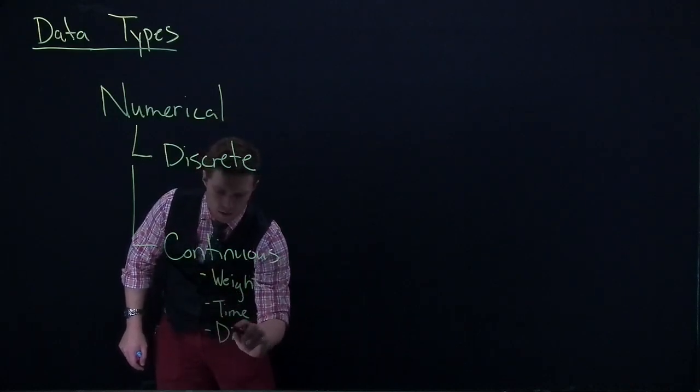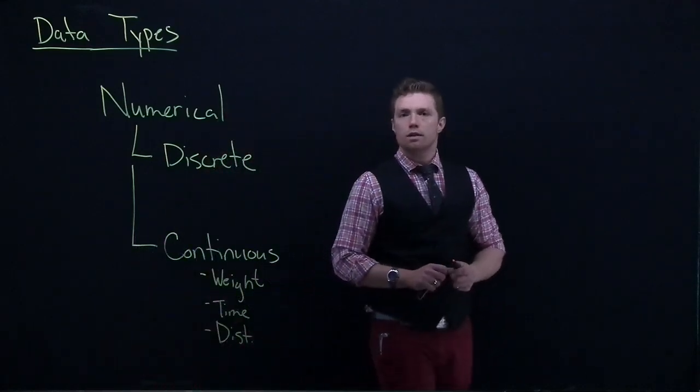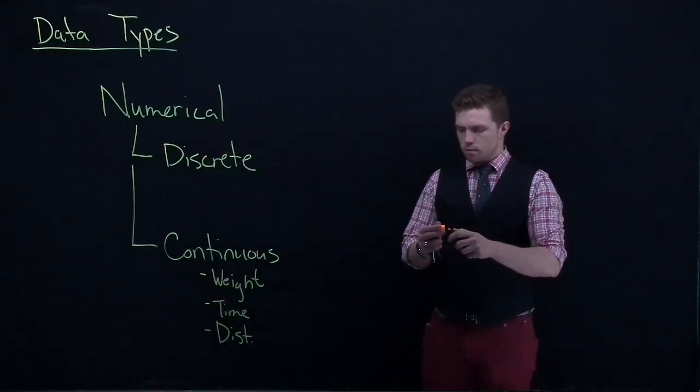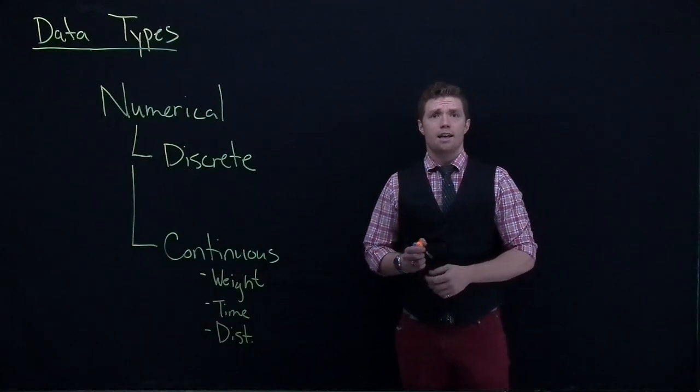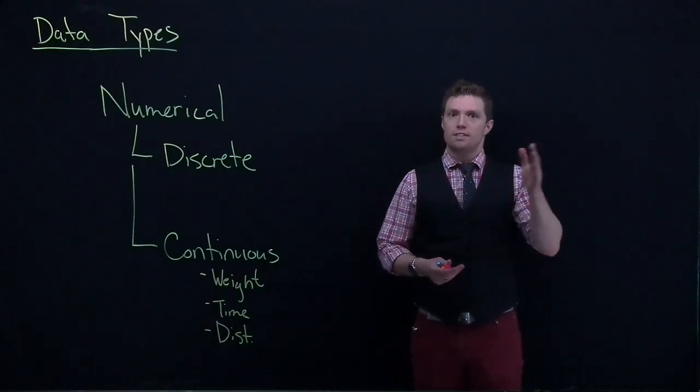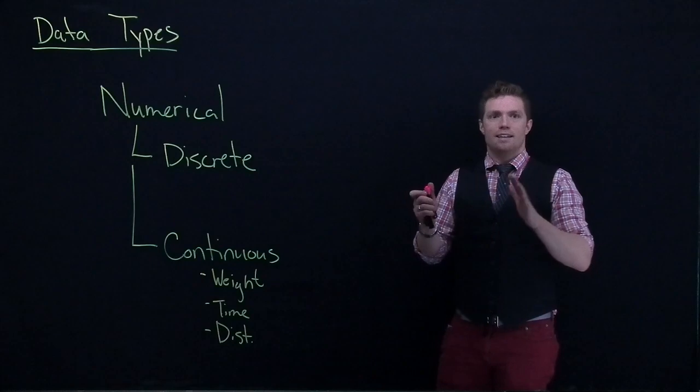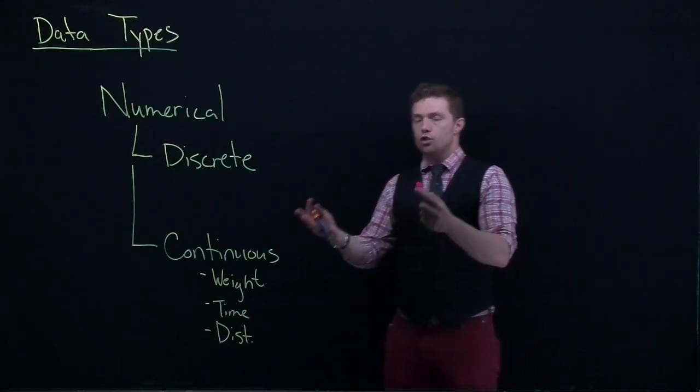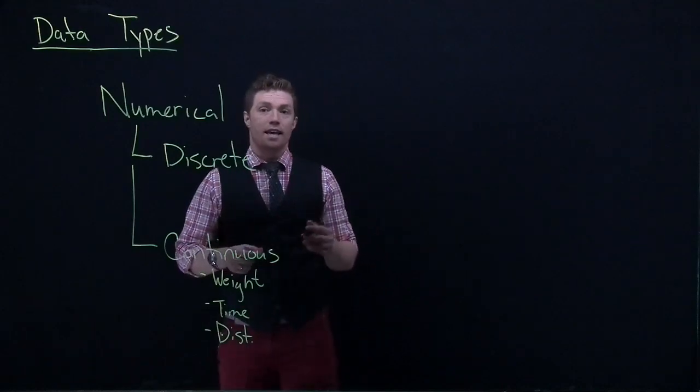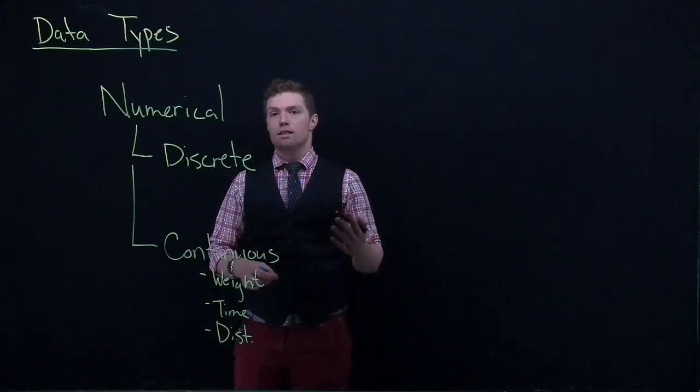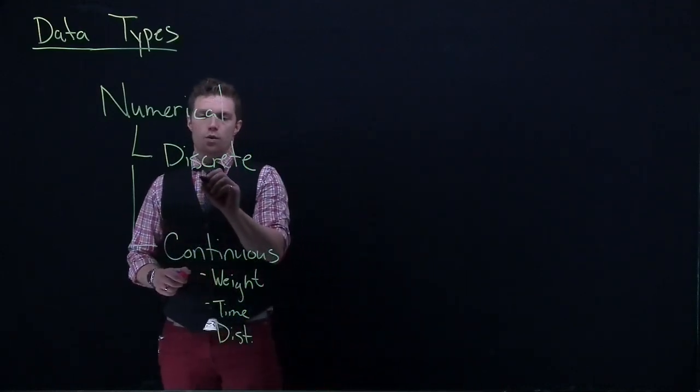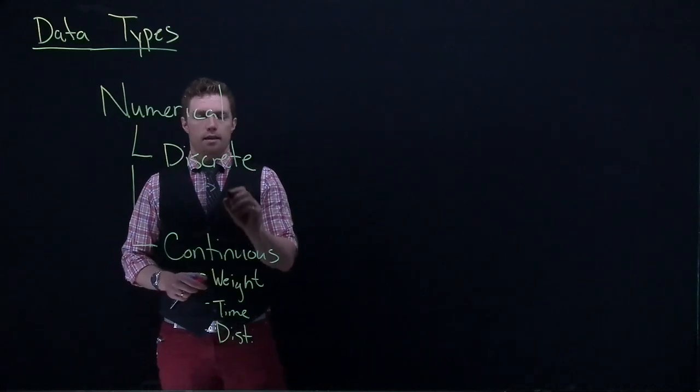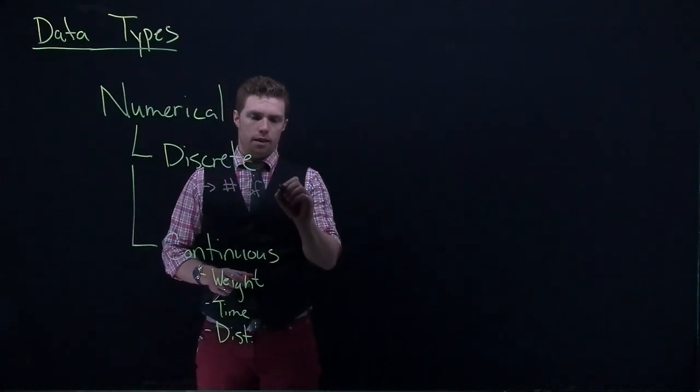Discrete data, on the other hand, has to go with specific steps, and there has to be kind of gaps between where you can actually record. Discrete things—a lot of times you'll hear "number of" is a good indicator that we're talking about discrete data. So we could talk about like number of siblings.